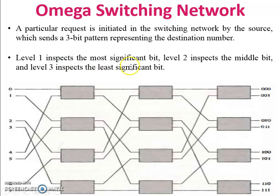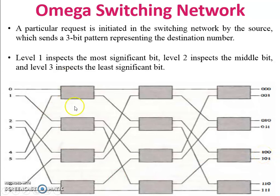Level one inspects the most significant bit, level two inspects the middle bit, and level three inspects the least significant bit. If any cell wants to reach destination 100, the first bit (most significant) is 1 — identified by level one switches. The second bit is 0 — identified by the middle level switches. The last bit is 0 — identified by the last level switches.